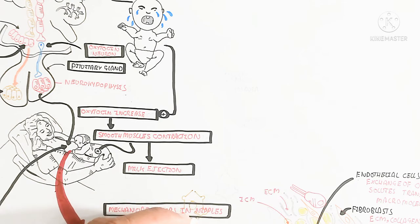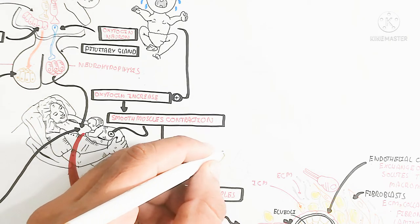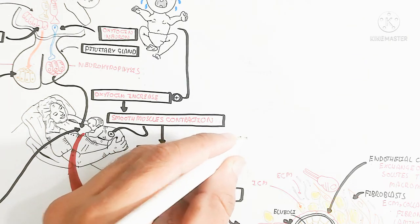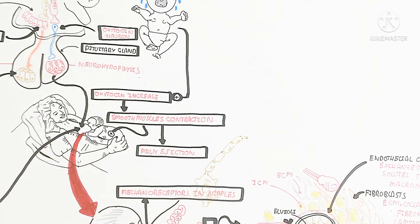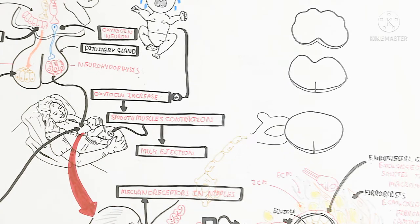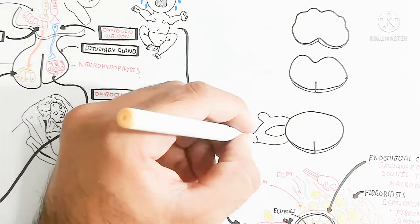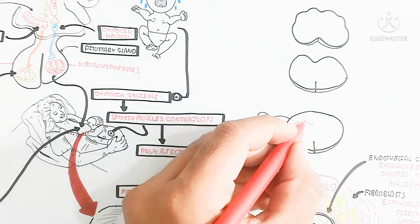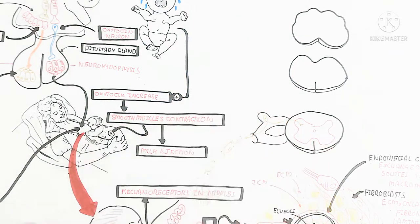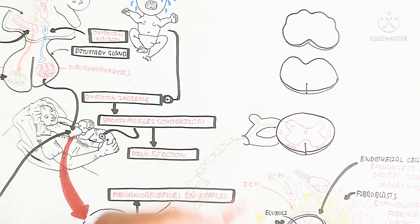The nipples contain very high-sensitivity mechanoreceptors. Touch and pressure stimulate these mechanoreceptors, and this stimulation travels through the sensory nerve to the cervical spinal cord, passing through the sensory ganglion — specifically the dorsal root ganglion — into the gray matter of the spinal cord.